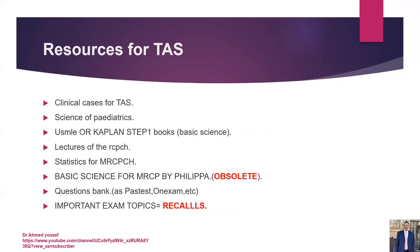Now for resources for TAS — this is wider and varies from person to person. There is the Clinical Cases for TAS from the Royal College. Also a book released in 2016 called Science of Practice — the old name was Master Course, but the old book is now obsolete. The updated name is Science of Practice, and this is the main textbook for TAS, not for FOB. It is minimal for FOB but very important for TAS.